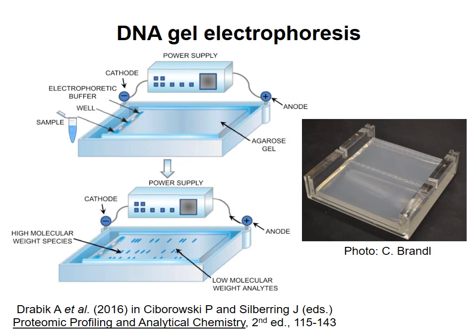To run an agarose gel, you put your RNA samples in individual wells at one end of the gel. You cover the gel with buffer and then apply an electric current. The negatively charged RNA will move through the gel away from the negative electrode and toward the positive electrode, with smaller pieces moving faster than larger pieces. After a length of time, the fragments will be separated on the gel based on their size.